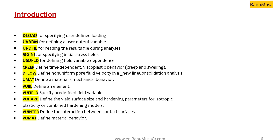USDFLD subroutine is used for defining field variable dependence. CREEP subroutine is used to define time-dependent viscoplastic behavior including creep and swelling. The FLOW subroutine defines non-uniform flow velocity in a consolidation analysis. UMAT defines material mechanical behavior. VUEL is used to define an element. VUFIELD is used to define specified predefined field variables. VUHARD defines the yield surface size and hardening parameters for isotropic or combined hardening models. VUINTER defines the interaction between contact surfaces. And VUMAT — which is taught in this training — is used to define material behavior.